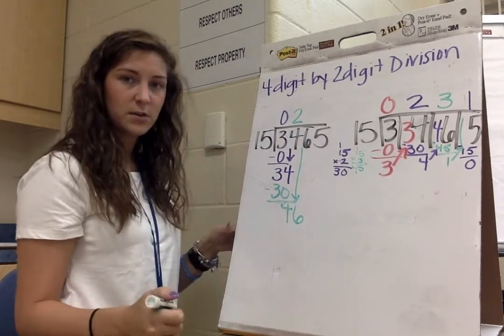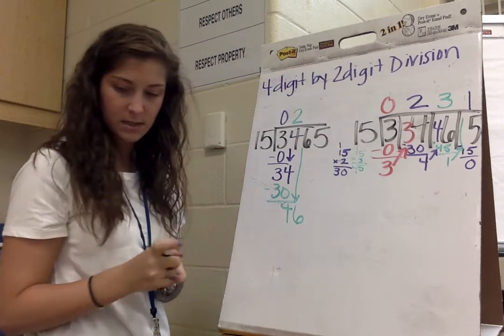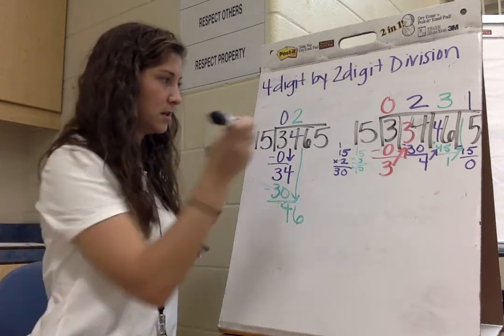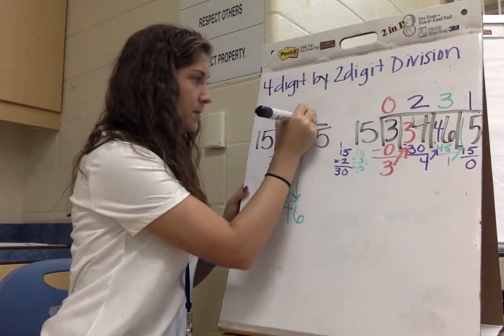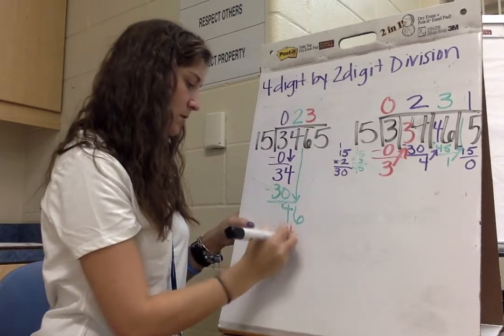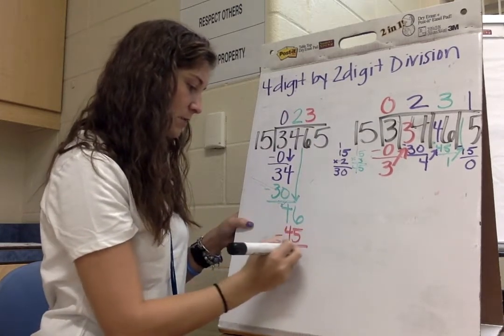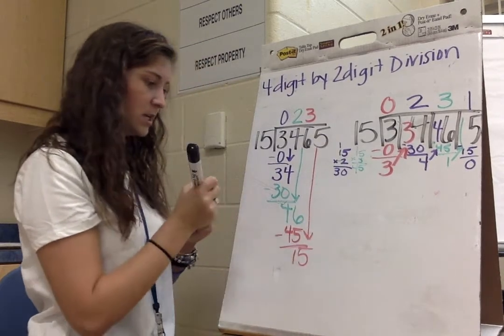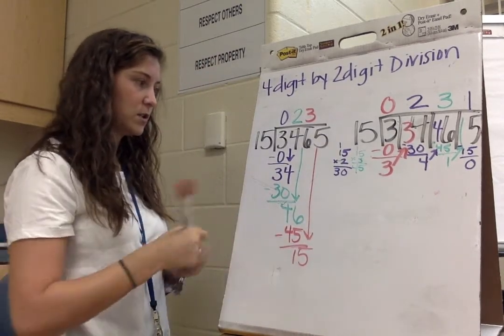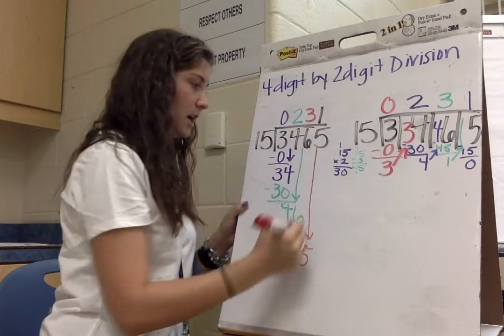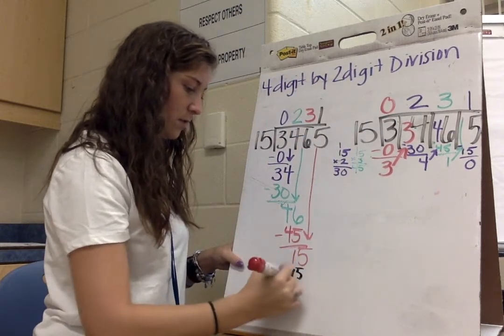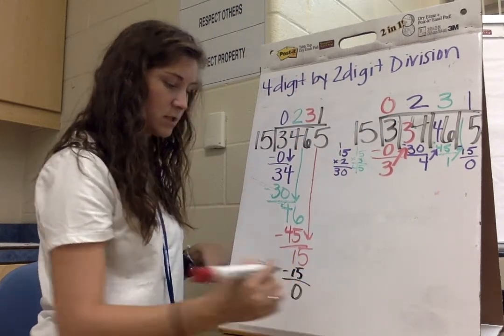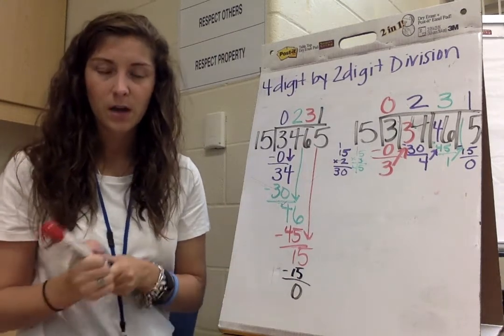Bring down my 6. 15 goes into 46, 3 times, because 15 times 3 is 45. We subtract, we're left with 1. Bring down the 15. 15 goes into 15, 1 time. 15 times 1 is 15. We subtract, we're left with 0.